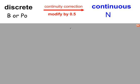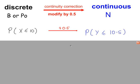The reason for doing so is to improve on the approximation that we get. A few basic rules to remember: for less than or equal to, you add a half.